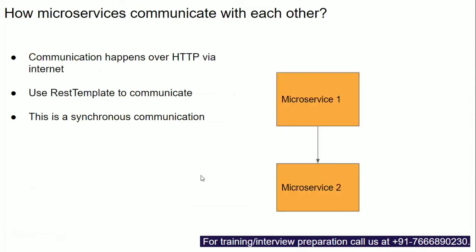The next question is: how do microservices communicate with each other? Suppose microservice one wants to get some data from microservice two. This communication can happen over HTTP, and Spring Boot provides features for this. One such feature is RestTemplate, a class used to make REST calls over HTTP — microservice one uses RestTemplate to call microservice two and get data back.